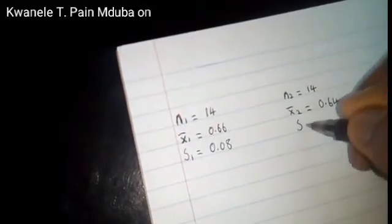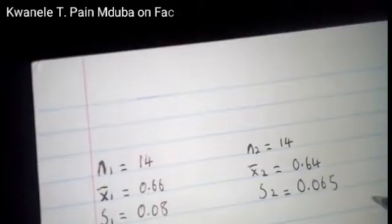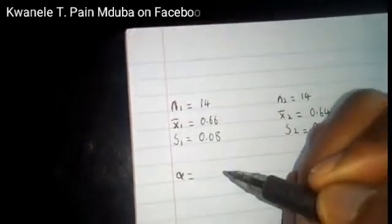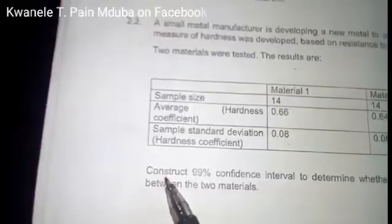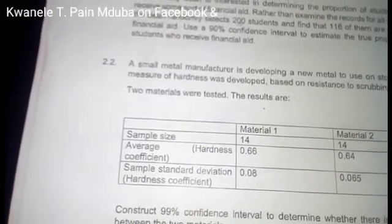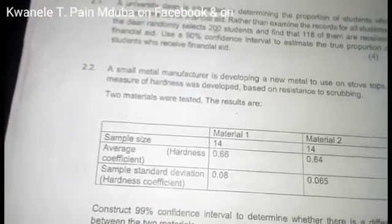The sample standard deviation s1 is 0.08, and sample standard deviation s2 is 0.065. Our alpha: since we are constructing a 99% confidence interval, alpha is 100% minus 99%, which equals 1%. So our alpha is 1%.